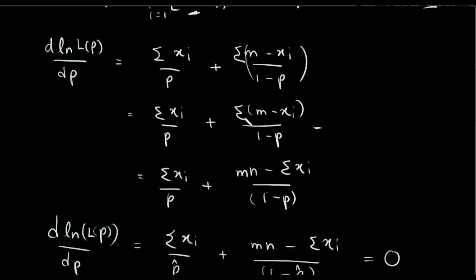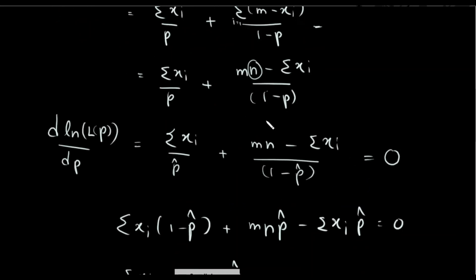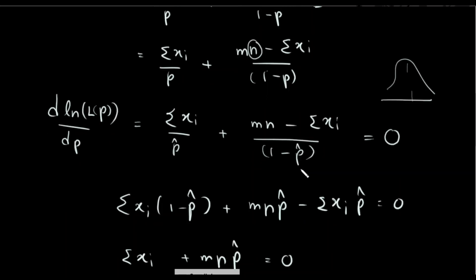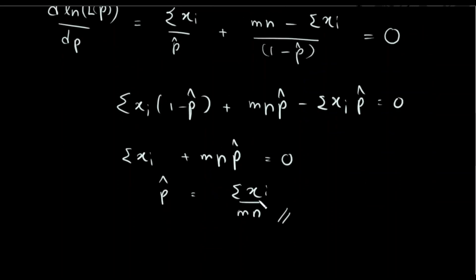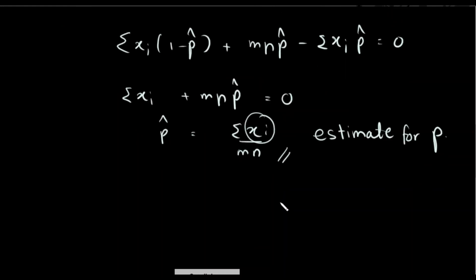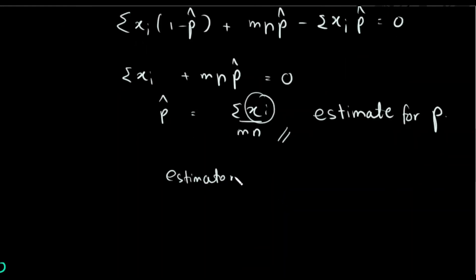Then we can add summation of minus xi times t. So it becomes summation of m minus summation of xi. So we have m times summation of m, and then minus summation of xi divided by (1 minus p). So we have to maximize the function. The result here is the estimation: p-hat equals summation of xi divided by m times n. This is the maximum likelihood estimate.